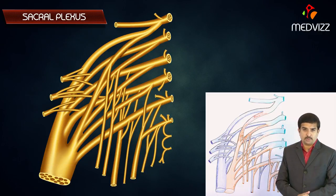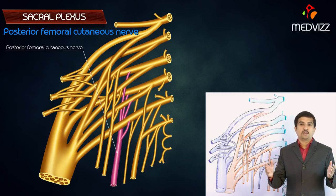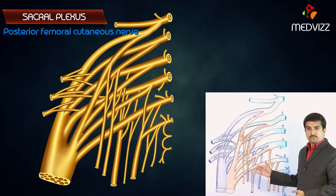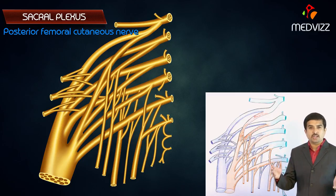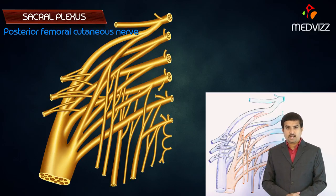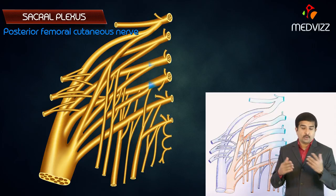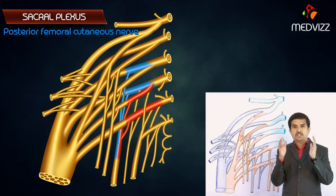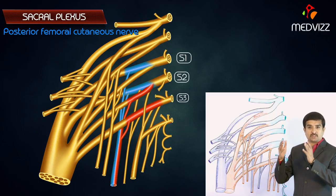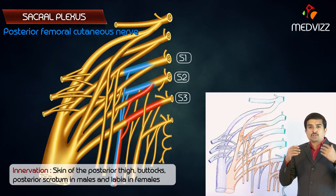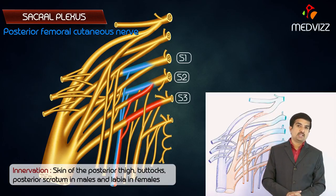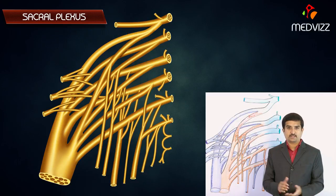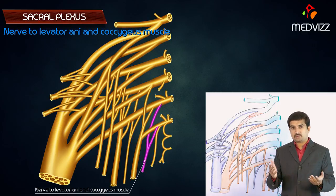The posterior femoral cutaneous nerve, also known as the posterior cutaneous nerve of the thigh, is a sensory branch of the sacral plexus. It arises from both anterior and posterior divisions of the anterior rami of S1, S2, and S3. It supplies the skin of the posterior thigh, buttocks, and the posterior scrotum in males and labia in females.